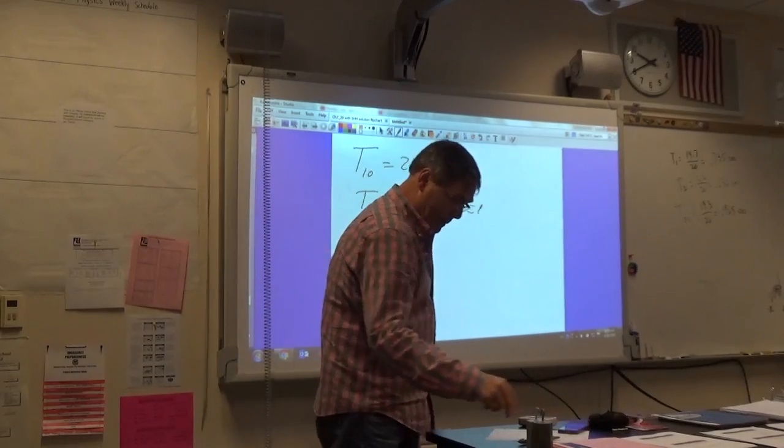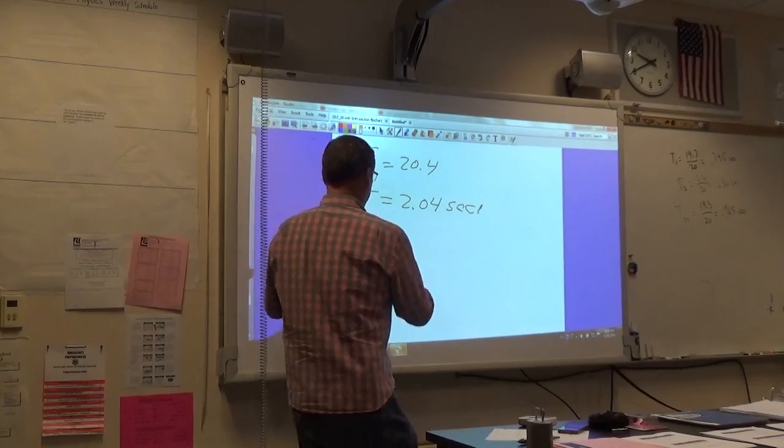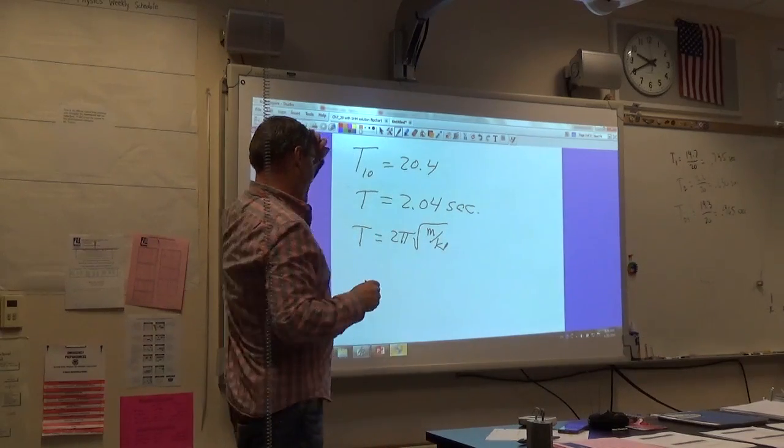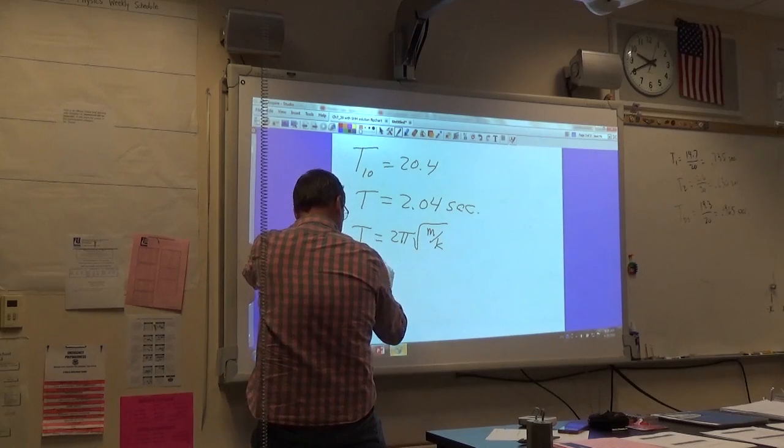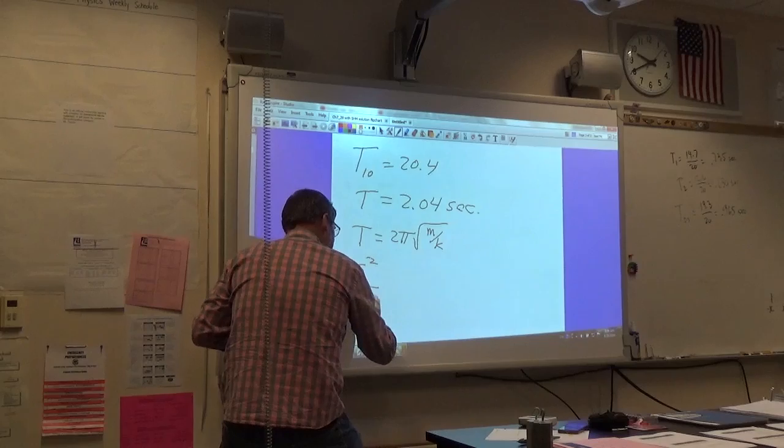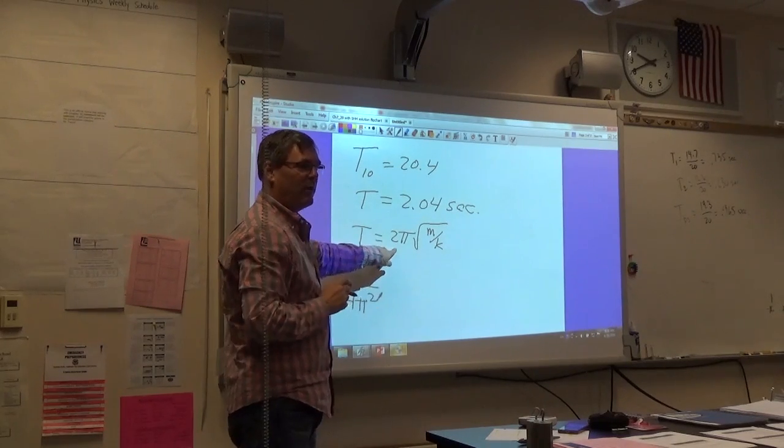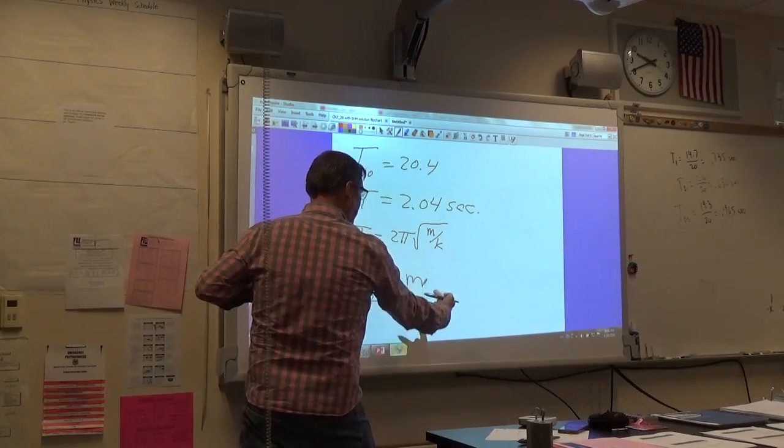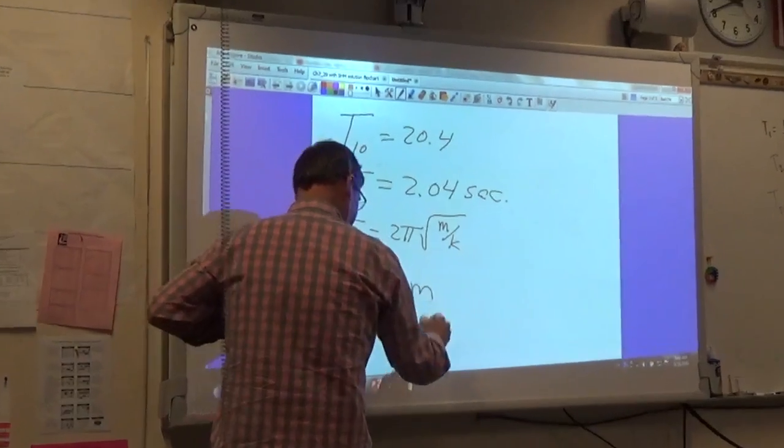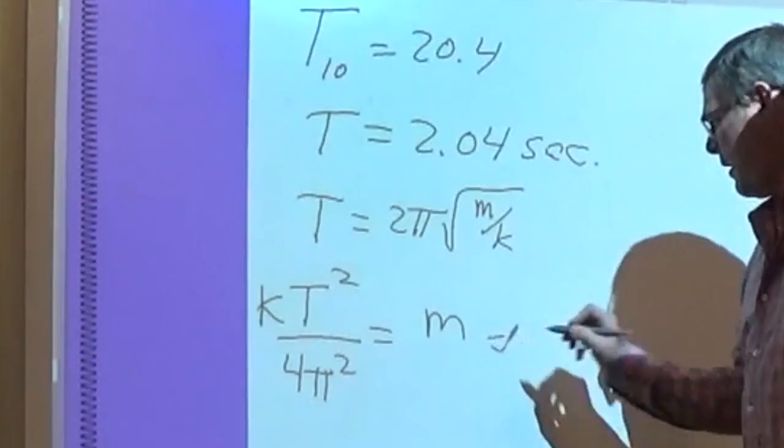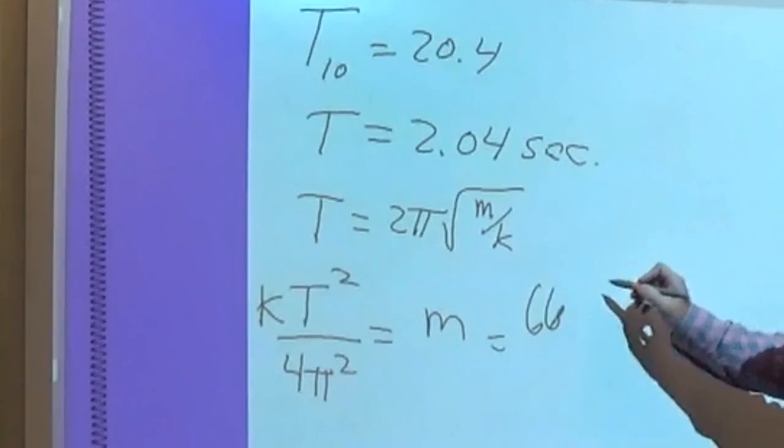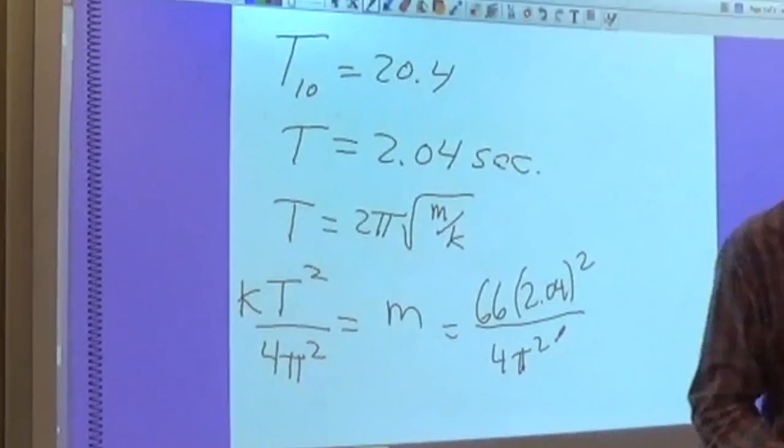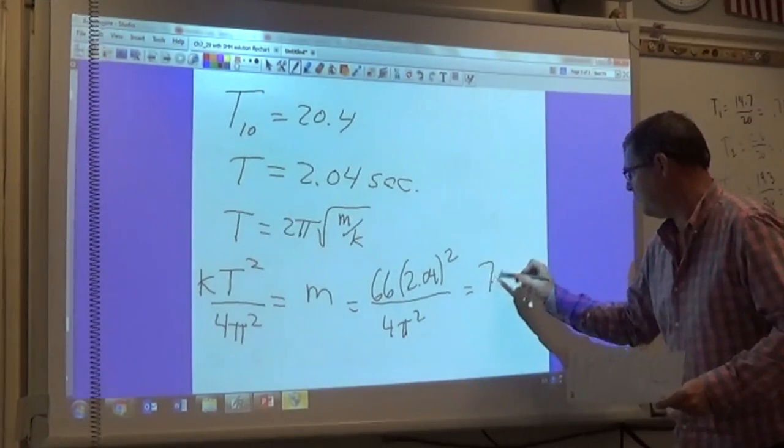So that is our period. So now let's take our equation. T equals 2 pi square root of m over k. And I'm going to solve that for m. So this is going to go to the other side. And I'm going to square both sides. So t squared over 4 pi squared. Everyone knows that, right? When you square 2 pi, you get 4 pi squared. Not 4 pi. Be careful. Equals m over k. But then the k is going to come over here. So there it is. So let's plug those numbers in. Our k constant was 66. Our period is 2.04. And 4 pi squared. So it's about 7.1 kilograms.